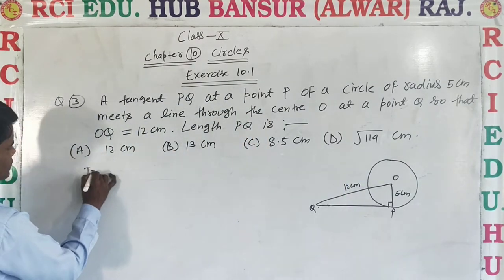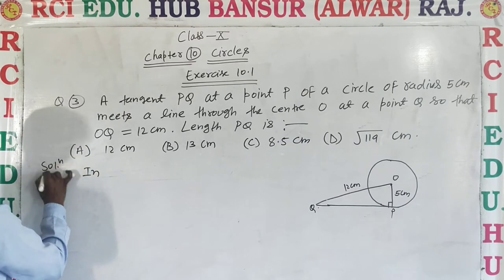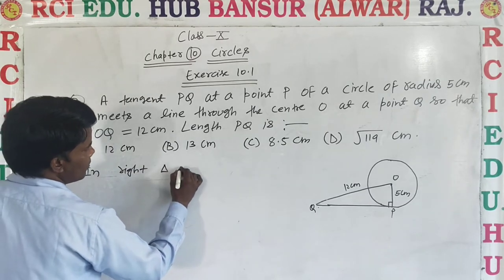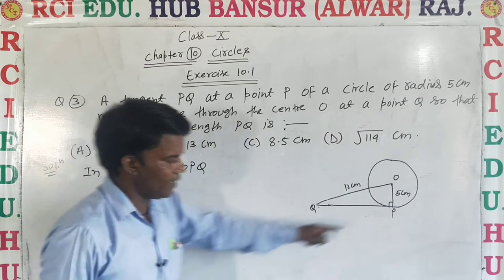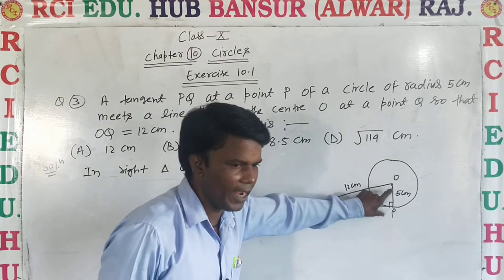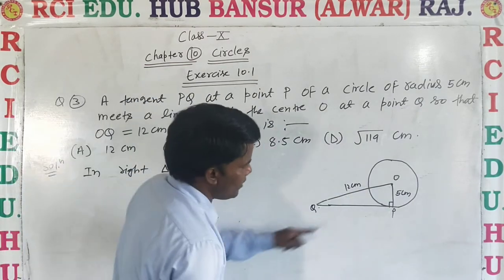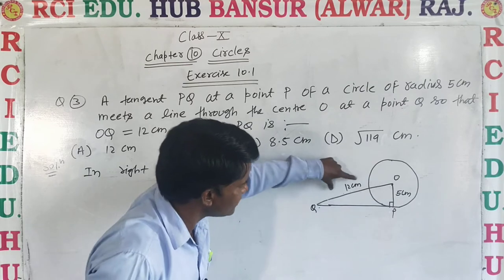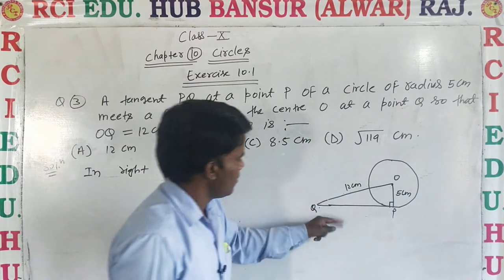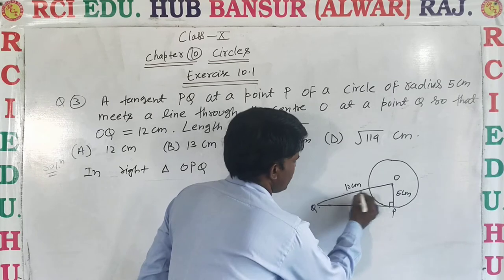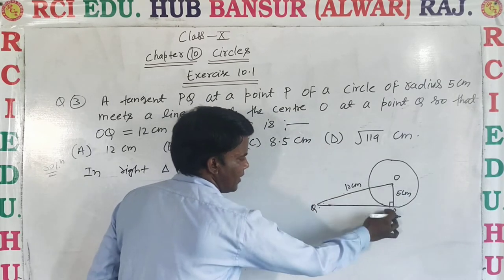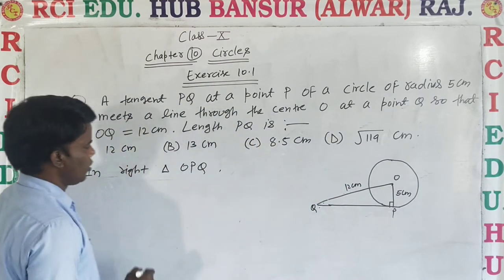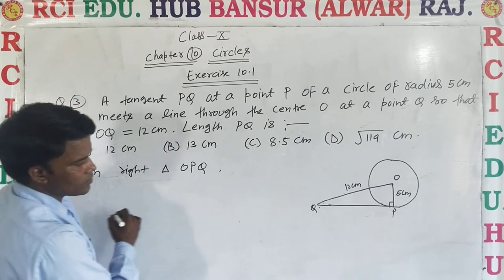In right triangle OPQ, where P is 90 degrees. By using Pythagoras theorem, the opposite of the 90 degree angle is the hypotenuse. OQ is the hypotenuse, OP is the perpendicular, and PQ is the base.